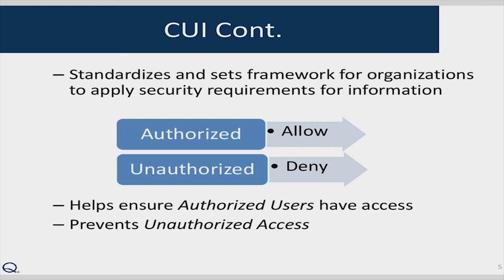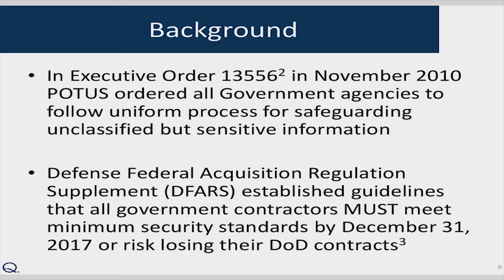The CUI standards set a framework for organizations to apply security requirements for information, ensuring that authorized users are allowed access and unauthorized users do not have access. The impetus for CUI actually started before the executive order, in a memo from George Bush after 9/11, which stated there were major issues with government agencies sharing information due to the way it was classified differently between agencies.